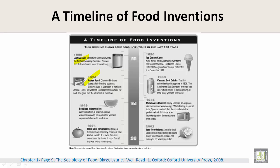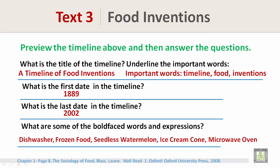The timeline also includes the seedless watermelon in 1949, the Flavr Savr tomato in 1994, tear-free onions in 2002, the microwave oven in 1946, canned soft drinks in 1938, and the ice cream cone in 1896. Please pause the screen and preview the timeline, then answer the questions.